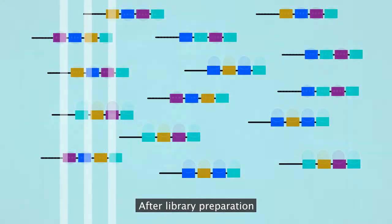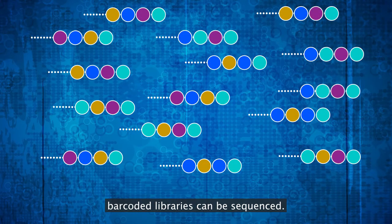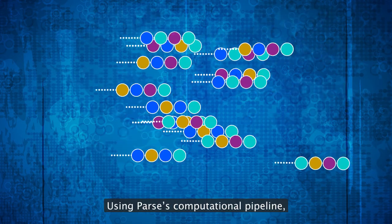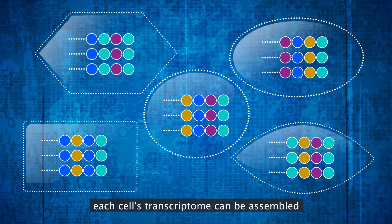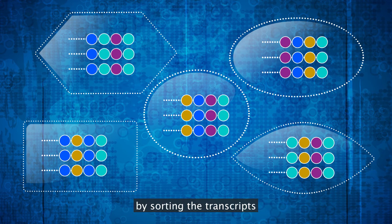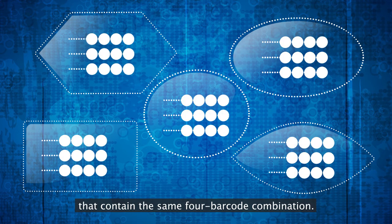After library preparation, barcoded libraries can be sequenced. Using PARSE's computational pipeline, each cell's transcriptome can be assembled by sorting the transcripts that contain the same four-barcode combination.